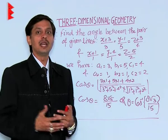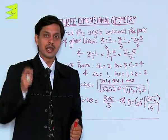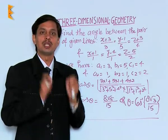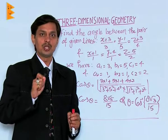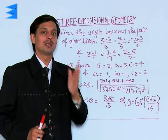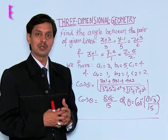After getting the DRs of the first line, that is a1, b1, c1, and DRs of the second line a2, b2, c2, we just need to apply the formula: cos theta equals a1 into a2 plus b1 into b2 plus c1 into c2, divided by root of a1 square plus b1 square plus c1 square, into root of a2 square plus b2 square plus c2 square.